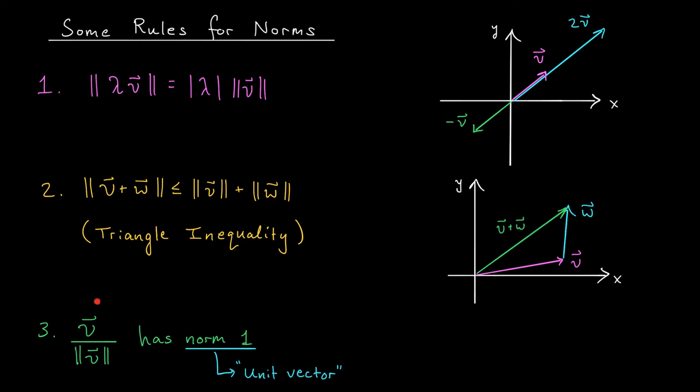Finally, the last property says that if you take any non-zero vector, V, and you divide it by its norm, the resulting vector will have norm 1. We call it a unit vector.